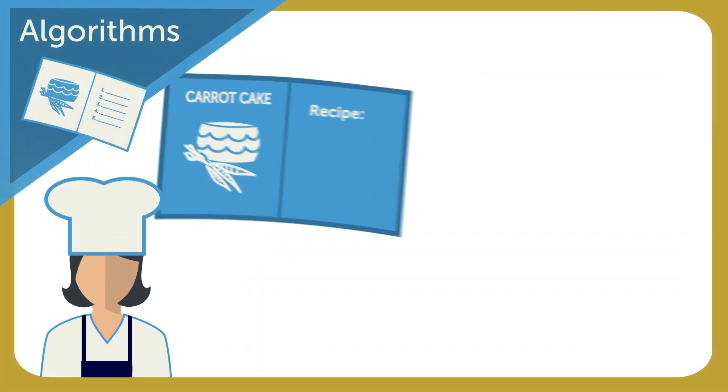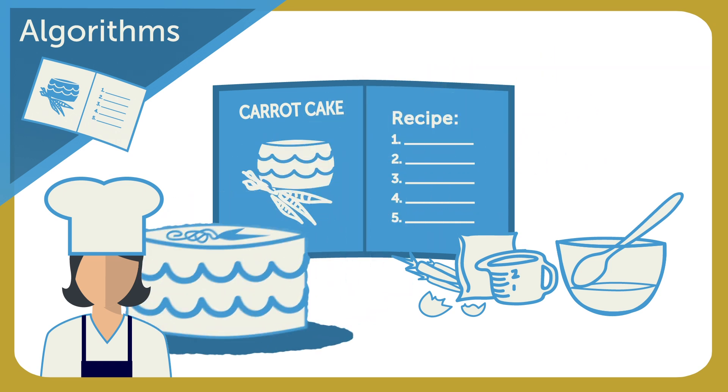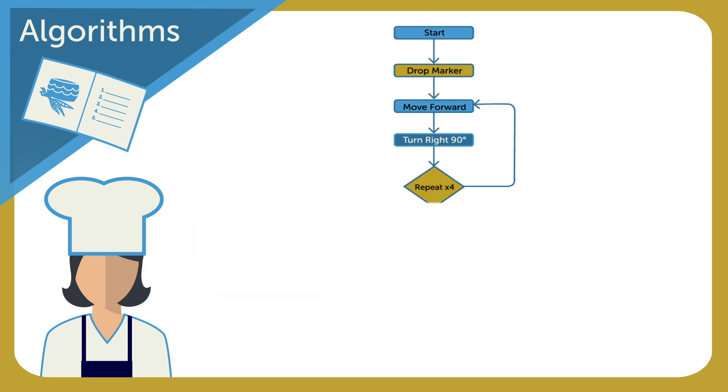First, let's look at algorithms. An algorithm is a repeatable process that delivers an expected result, in the same way that a cook uses a recipe to create and replicate an entree. When people create algorithms, they break down or decompose complex processes into a series of smaller, simpler steps.